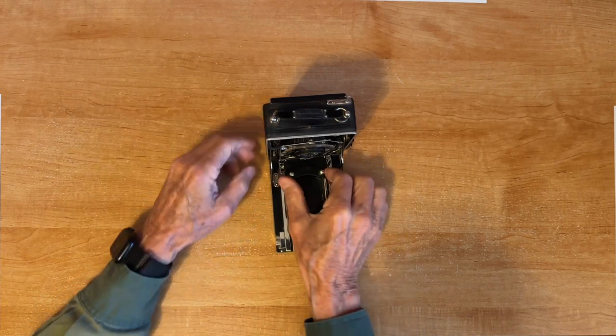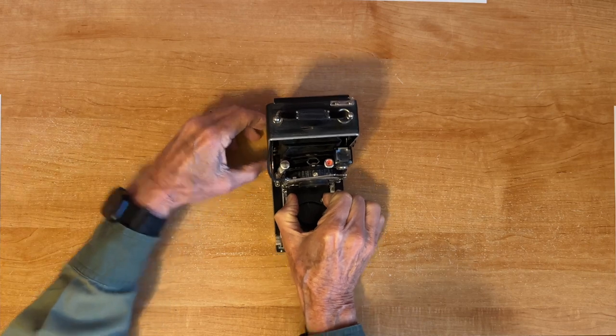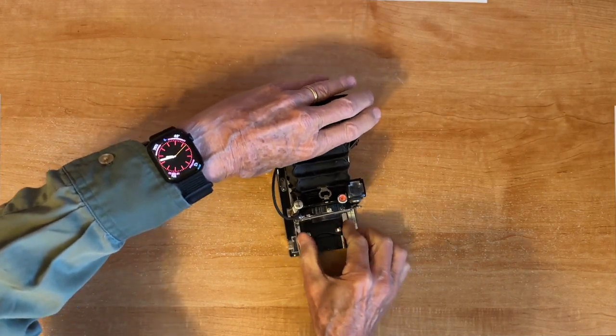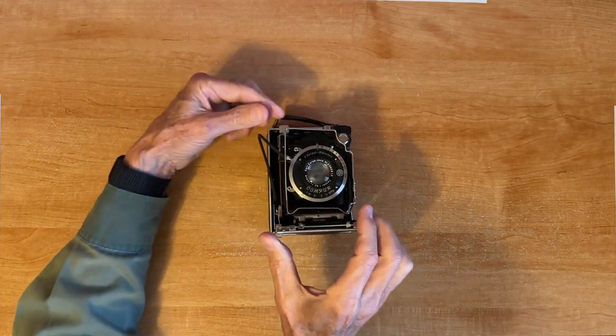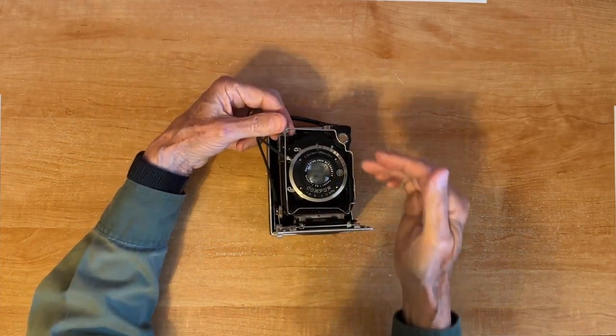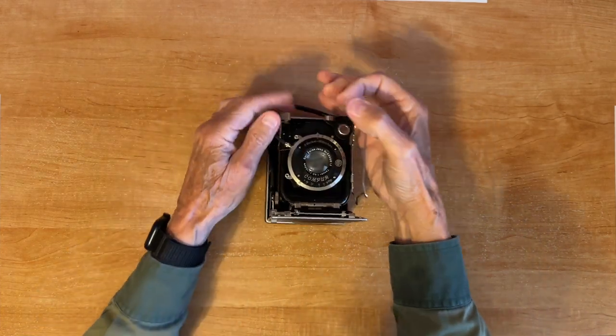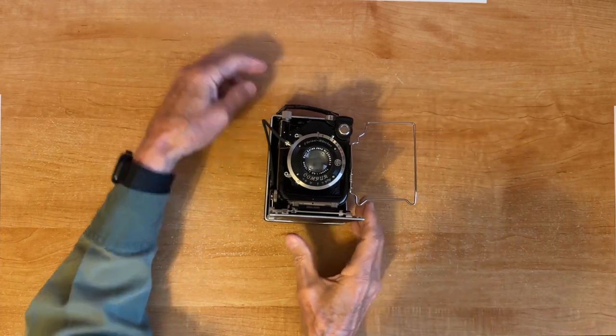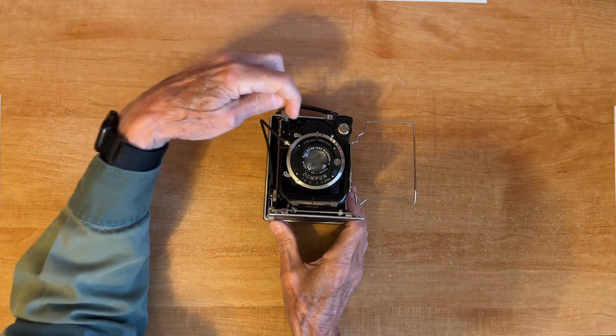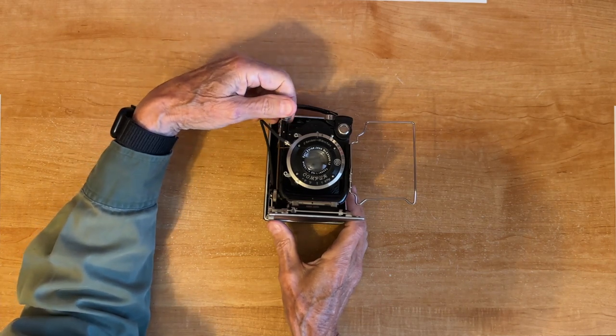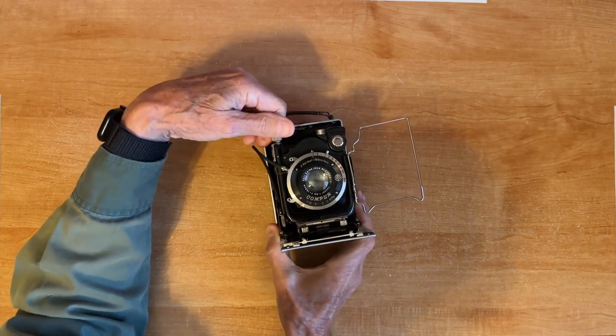It pops down like that. These two little finger knobs you squeeze in and it comes forward and it will lock in the infinity position there. On the front of the camera this knob is to raise and lower the lens. So this will raise and lower the lens and there is a little white dot here that you align with another little white dot to get the lens back in the center because you could crank it up or down quite a ways.